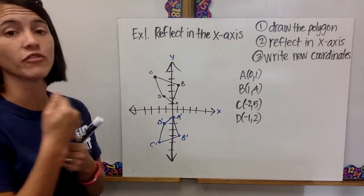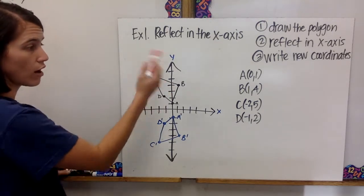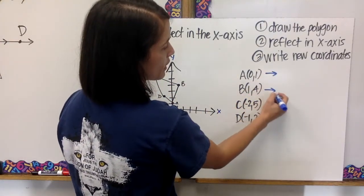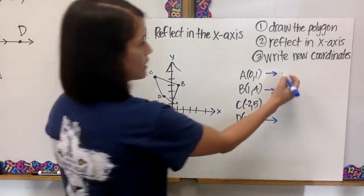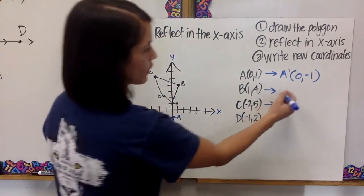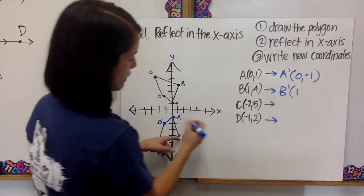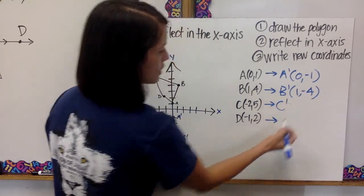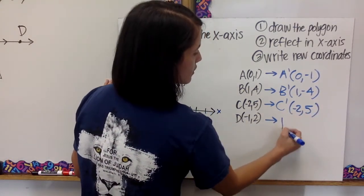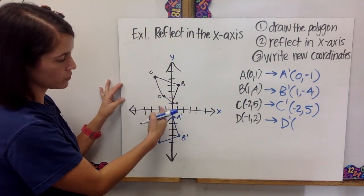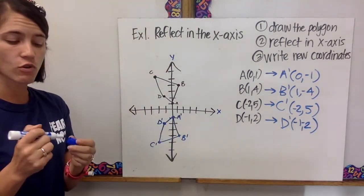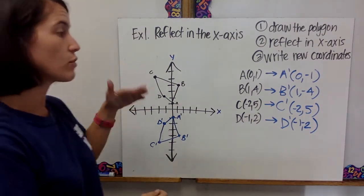The last step is to write the new coordinates. I have my old coordinates, and I'm going to draw my arrows. A prime is (0, negative 1). The coordinates of B prime are (1, negative 4). C prime is (negative 2, negative 5). And D prime — we went left 1 and down 2 — so D prime is (negative 1, negative 2). Those are my new coordinates. That is an example of everything: drawing the polygon, reflecting it, and then getting your new coordinates.